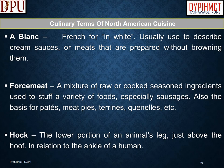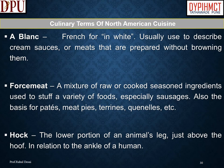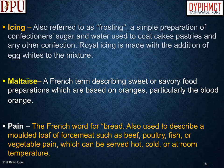Culinary terms of North American cuisine: À blanc is a French term meaning 'in white,' usually used to describe cream sauces or meats prepared without browning. Force meat is a mixture of raw or cooked seasoned ingredients used to stuff a variety of foods, especially sausages, and is also the basis for pâtés, meat pies, tureens, and quenelles. Hock refers to the lower portion of an animal's leg just above the hoof, in relation to the ankle of a human. Icing, also referred to as frosting, is a simple preparation of confectioners' sugar and water used to coat cakes, pastries, and other confections.